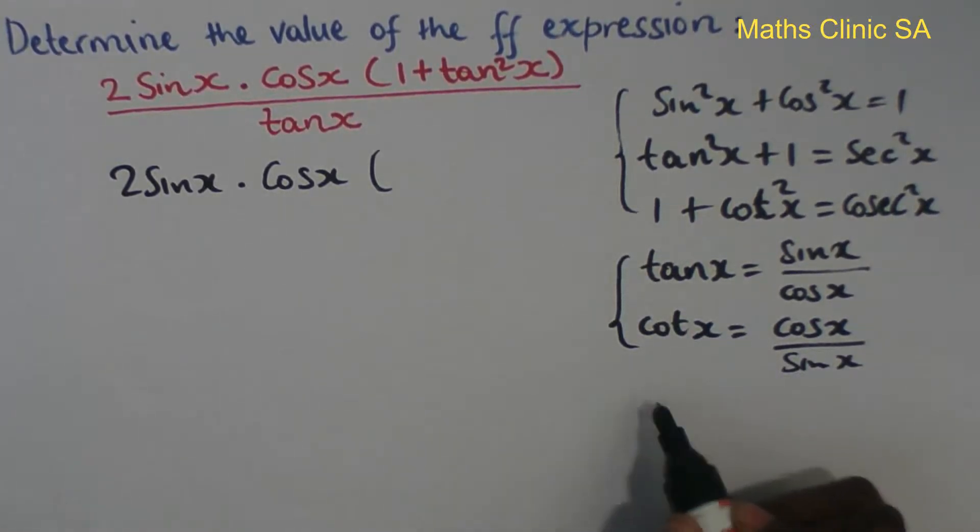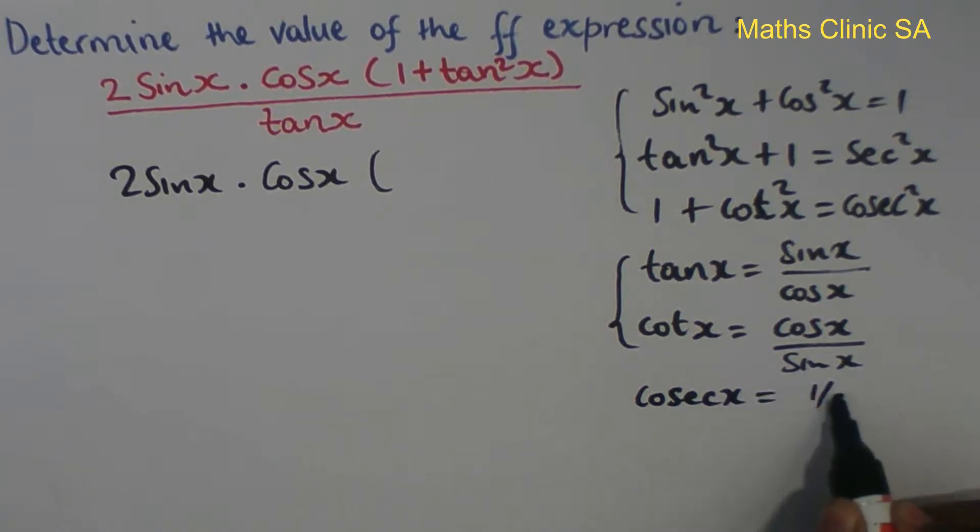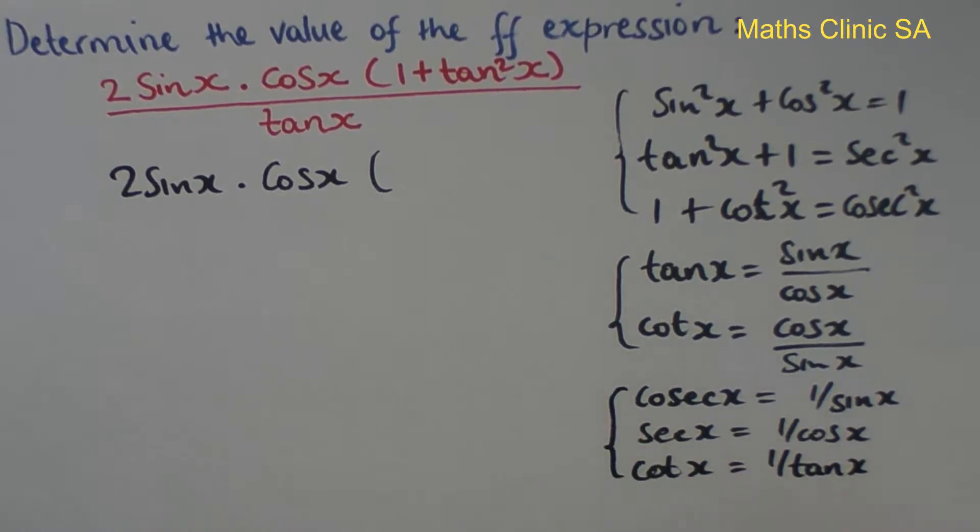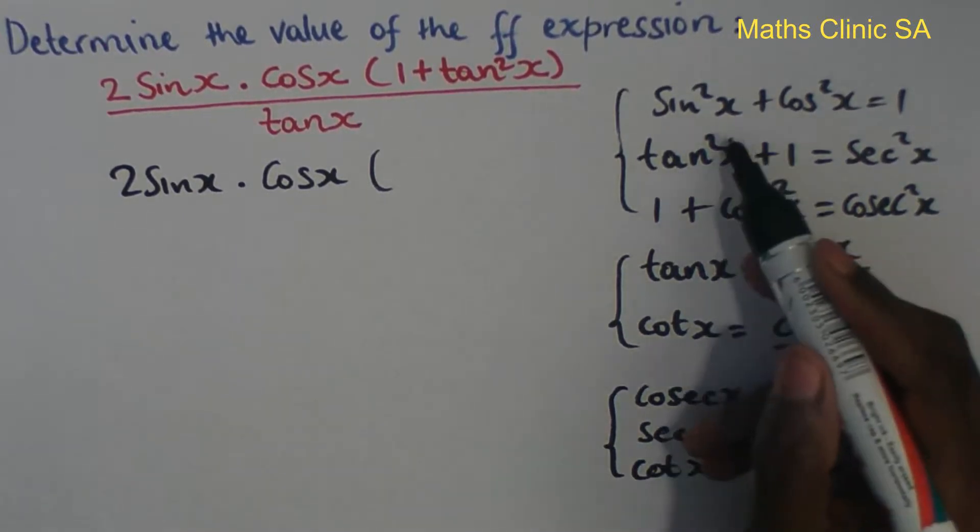And the reciprocal identities: cosec of x equals 1 over sin x, sec of x equals 1 over cos x, cot x equals 1 over tan x. So we have reciprocal, quotient, and Pythagorean squared identities.